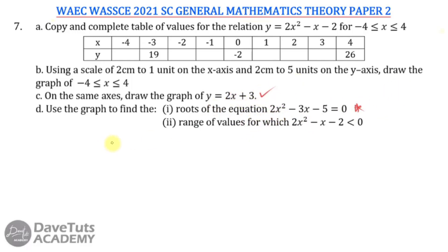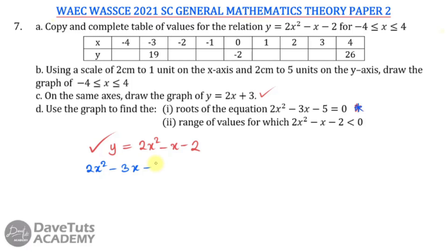Originally we are given y = 2x² - x - 2. As a rule of thumb, whatever subsequent question comes from your graph, you should tailor it to this particular equation. In the first case, we are told that 2x² - 3x - 5 = 0.